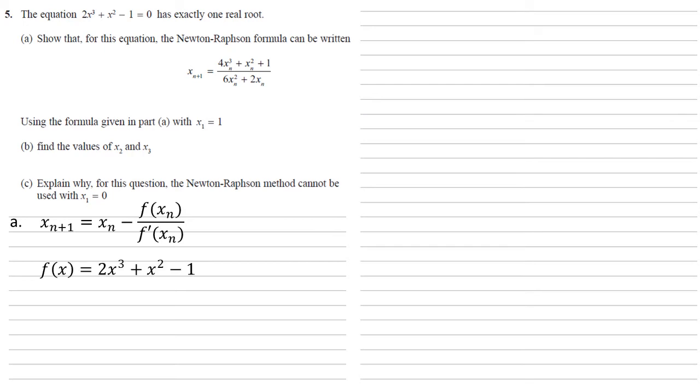Our f of x is 2x cubed plus x squared minus 1, which we've been given. Then differentiating this gives us f dash of x equals 6x squared plus 2x.